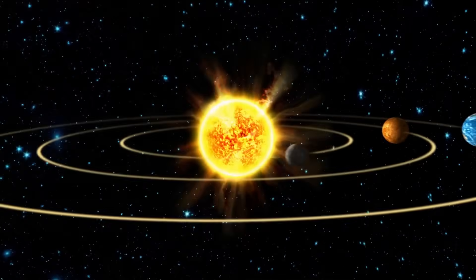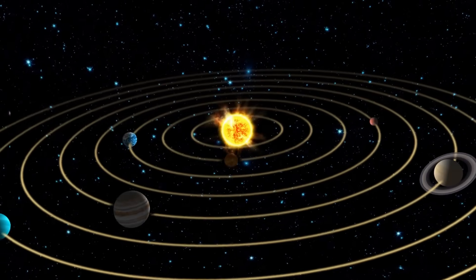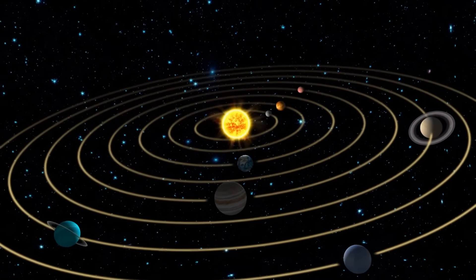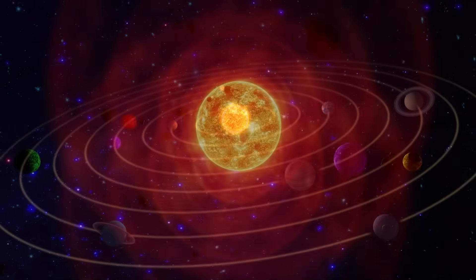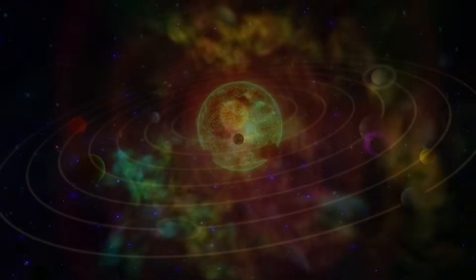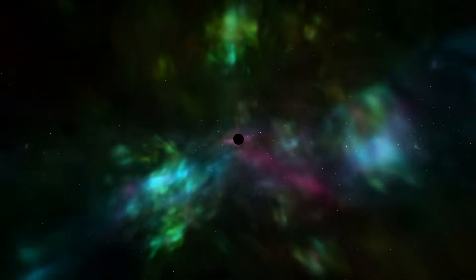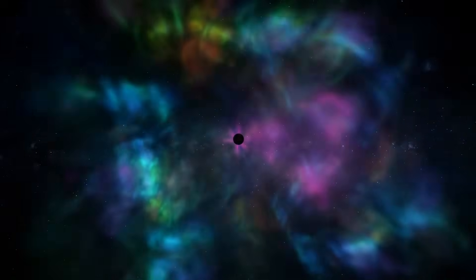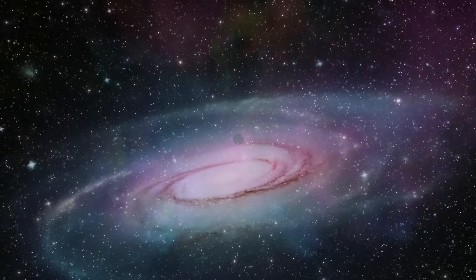We often imagine our solar system as a peaceful, isolated bubble of planets calmly orbiting the sun, far from any outside chaos. But in reality, we're just one tiny system, drifting through a galaxy teeming with debris, comets, and mysterious interstellar objects.